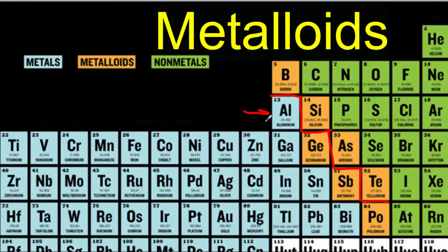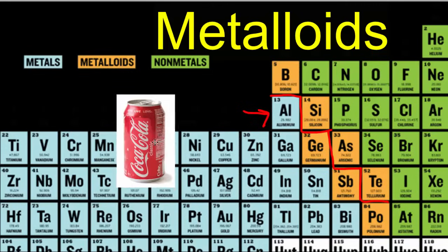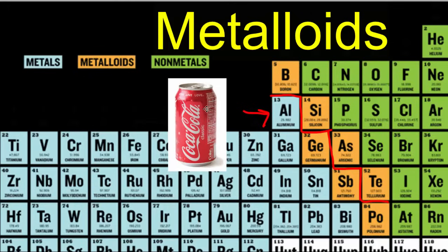The one exception is aluminum. Aluminum, while it's on the stair step and it appears like it would be a metalloid, think about it. We look at an aluminum can. Aluminum is a great conductor of electricity. It is malleable. It's been formed into thin sheets for these aluminum cans. And it's definitely shiny. So, it's giving you all the characteristics of a metal.